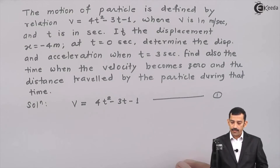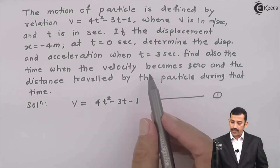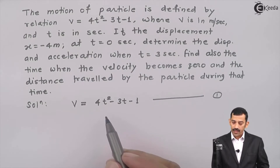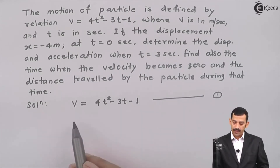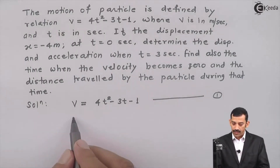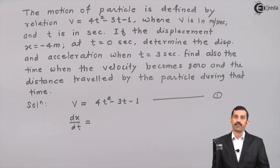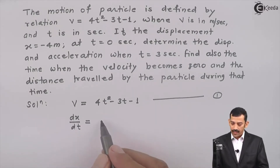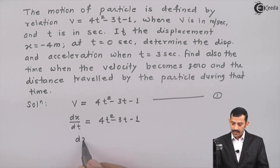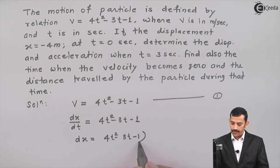We have to find out displacement as well as the time instant when velocity becomes 0. To do this, we must know the equation of displacement from the equation of velocity. As v is a function of time t, velocity can be written as dx upon dt. The rate of change of displacement with respect to time is velocity, so dx by dt equals 4t squared minus 3t minus 1. Therefore, dx equals 4t squared minus 3t minus 1 dt.